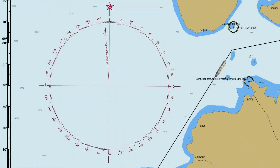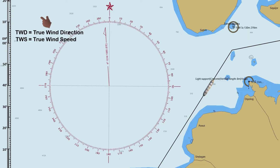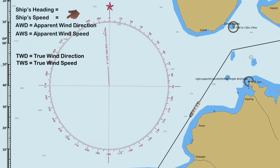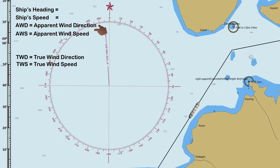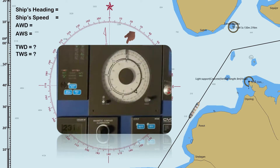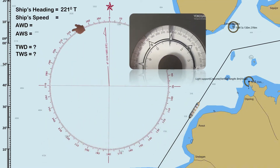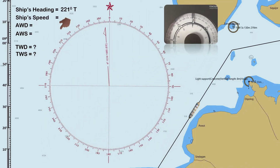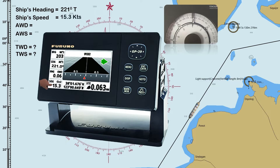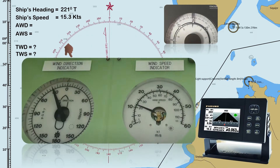In this video we will determine the true wind direction and speed when the ship is moving. The following information should be gathered before we can proceed: the ship's heading, the ship's speed, the apparent wind direction, and the apparent wind speed. We will take the ship's heading from the gyro compass — the heading is 221 degrees. For the speed, we take it from the GPS receiver — the ship speed is 15.3 knots.